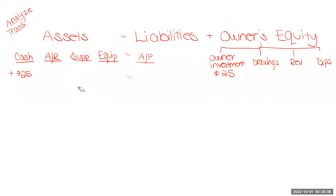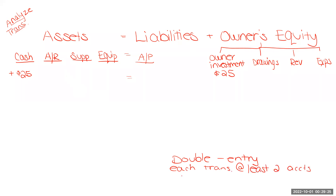So for each transaction, we're going to analyze it and see the effects on the accounting equation. In chapter three, you read about something called double-entry accounting — it was in topic 2.1. It basically says that for each transaction, at least two accounts have to be impacted. That kind of makes sense because this is all an equation and we're trying to keep it in balance. We know that if we didn't have at least two accounts involved, we couldn't balance. So we're always going to have at least two items impacted.